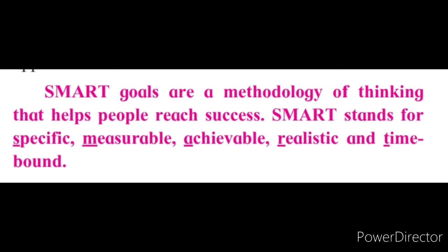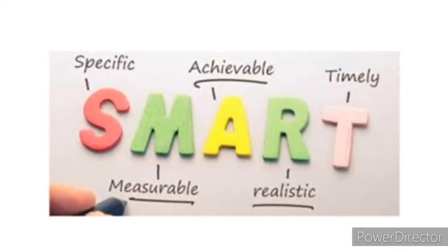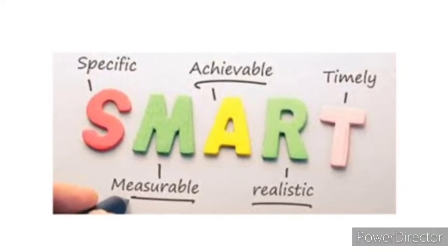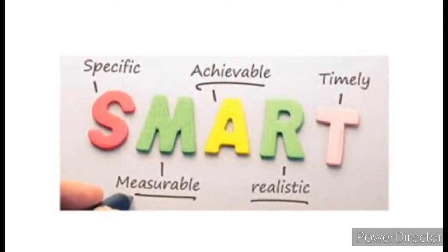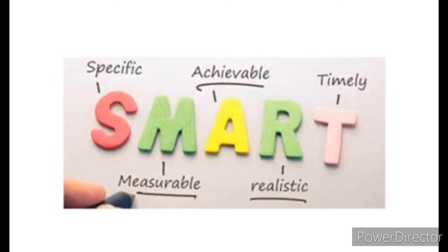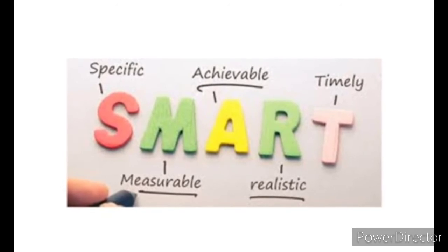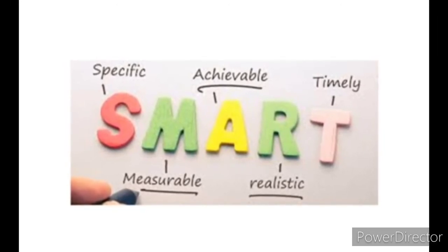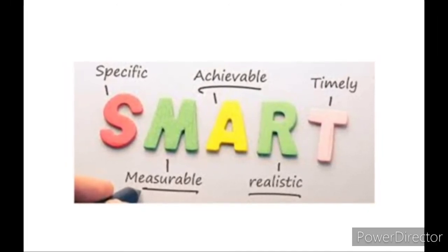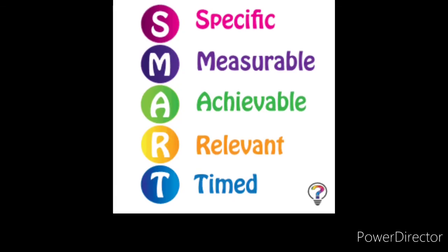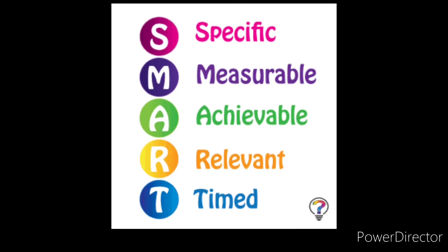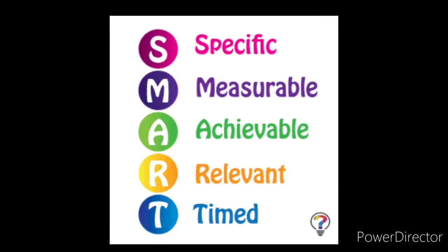Look at this image and learn. S stands for Specific — in Marathi, neme-kai wishist. M stands for Measurable — in Marathi, mozma karta yana jogue. A stands for Achievable — in Marathi, saadhyya karta yana jogue. R stands for Realistic — in Marathi, vastavari. And T stands for Time-bound.